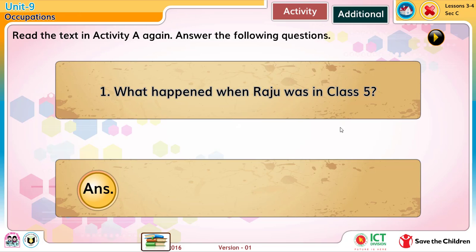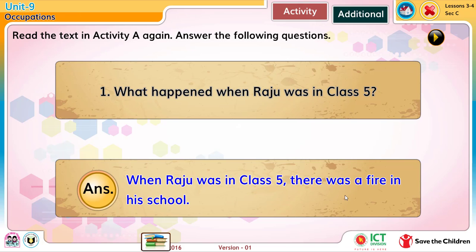Read the text in Activity A again. Answer the following questions. 1. What happened when Raju was in class 5? When Raju was in class 5, there was a fire in his school.